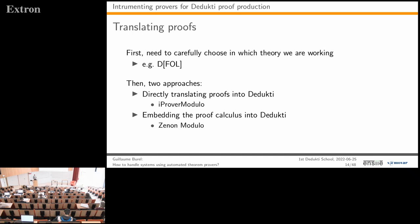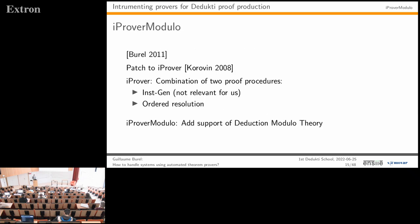To illustrate, I will present how it is done in iProver Modulo. iProver Modulo is a patch to iProver, which combines a method called instantiation generation with ordered resolution. What is interesting for us is ordered resolution, because it is the resolution proof that will be translated into Dedukti.